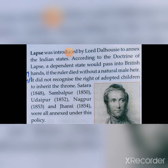It did not recognize the right of adopted children to inherit the throne. So a godly (adopted) child could not be placed on the throne. Only if you have a natural male child — a son — then only he can control the state, otherwise the state will go under the hands of the Britishers.